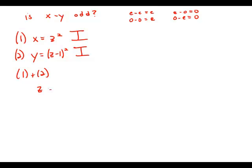Suppose z is an odd number. Well, if z is an odd number, then when we square it, we'll get another odd number. So that means x is an odd number. If z is an odd number, it means that z minus one will be an even number.